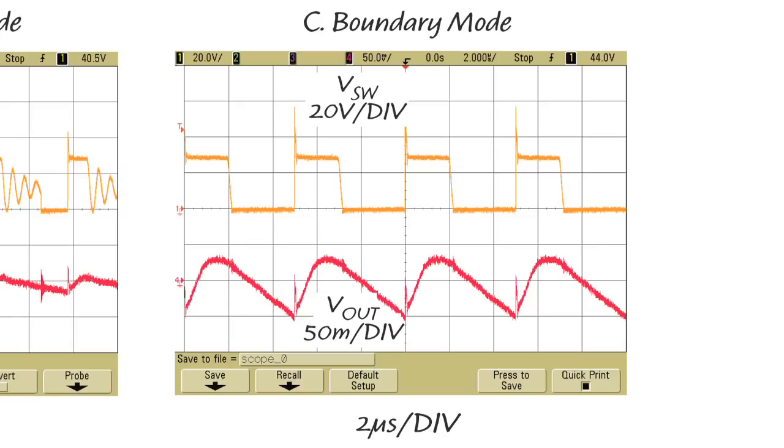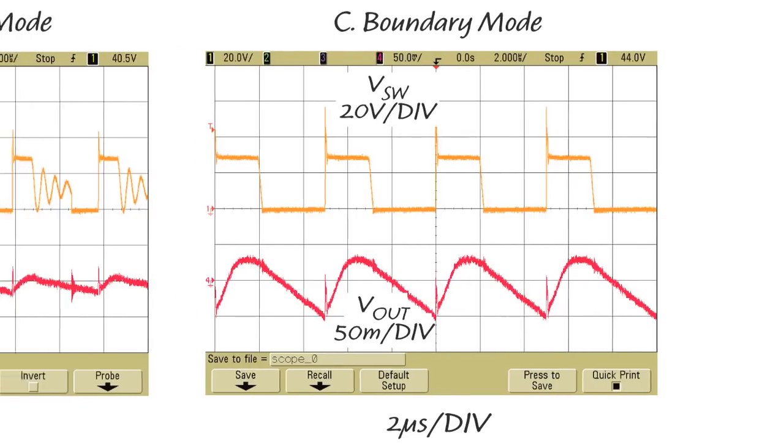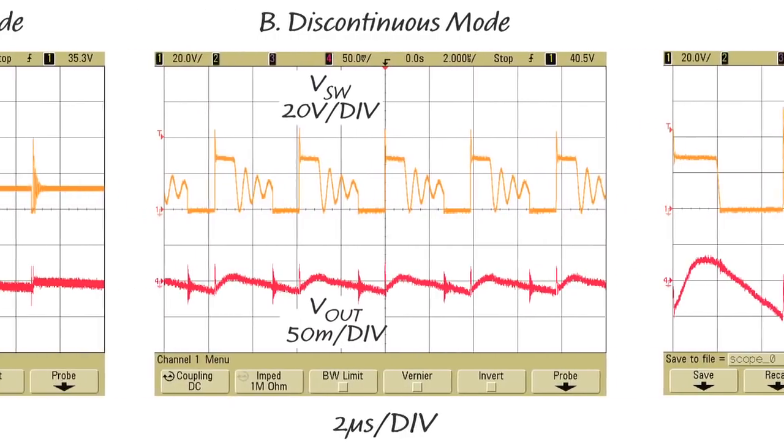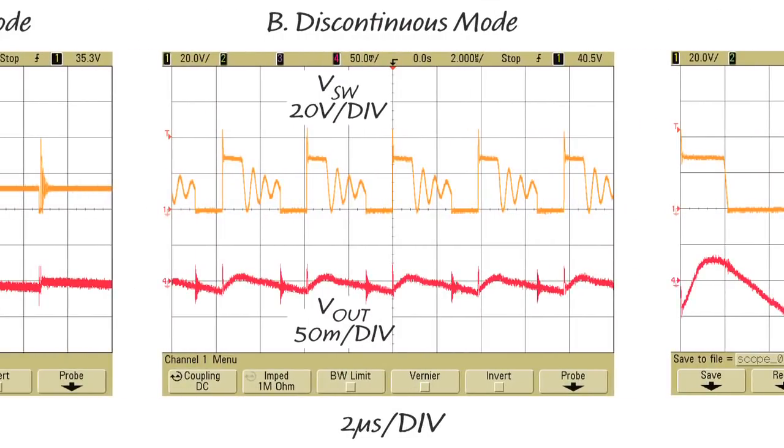At point C, when the load decreases, the primary switch current limit decreases, but the switching frequency first increases and then decreases when it gets into discontinuous mode. At point B, with 0.5A load current, the LT8302 works in discontinuous mode.